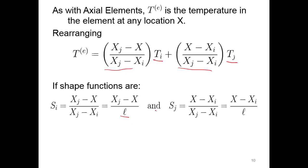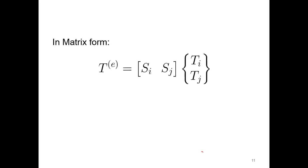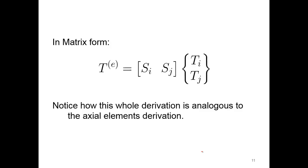We get our shape functions for linear elements. The overall equation for our temperature in the element is the shape function of node i times the temperature of node i, and the shape function of node j times the temperature of node j. So in matrix form, relatively simple. Si, shape function of node i, shape function of node j, temperature of node i, temperature of node j. Notice how this whole derivation is analogous to axial elements, very similar to what we do with axial elements.